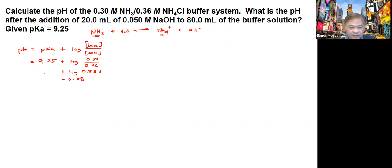If you're going to get that value, that equals 0.08. If you put it with 9.25 minus 0.08, you will have a pH that equals 9.17. That answers the initial question we have in the problem.